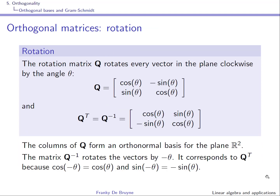A first example of an orthogonal matrix is the rotation matrix, which rotates every vector in the plane clockwise by angle theta, so we work in R2. When you do a rotation, the length is preserved, and if you rotate two vectors both by angle theta, the angle is preserved. So you know this matrix must be orthogonal, and therefore Q transpose must equal Q inverse. The inverse transformation is rotating vectors by minus theta.